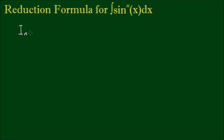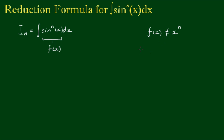In this video, let's derive the reduction formula for the integral of sine to the nth power of x with respect to x. First of all, let's call this integrand f. We see that f is not just x to a power — f is actually equal to a function of x to a power. Because of this, it's not possible to just use a standard power integral to formulate the result. But we do have the two principal methods of integration: substitution or integration by parts.